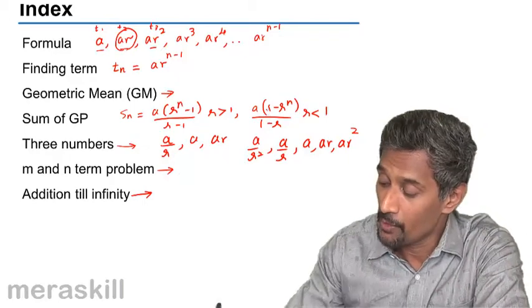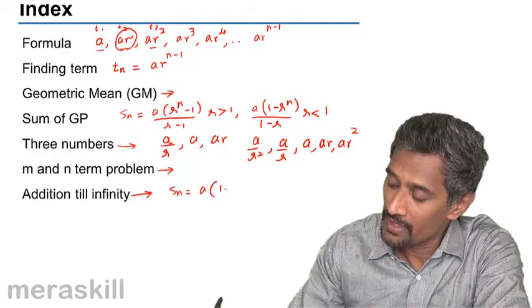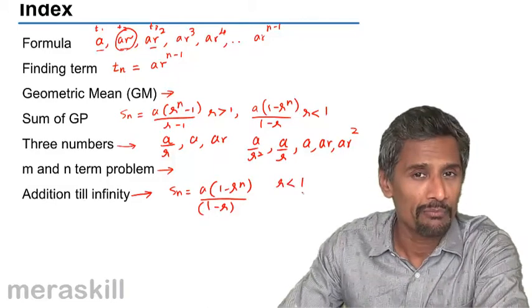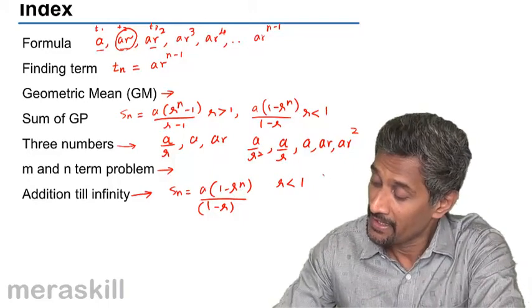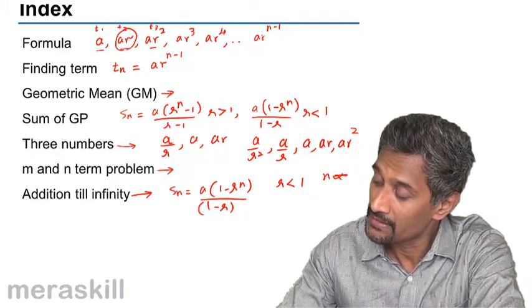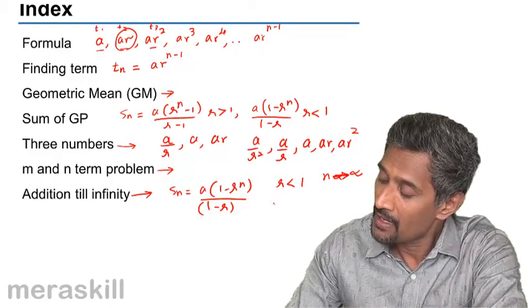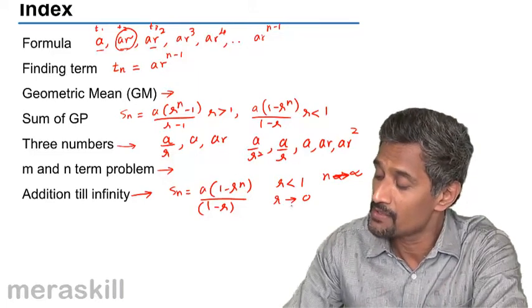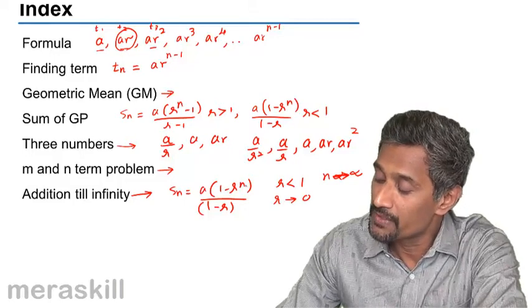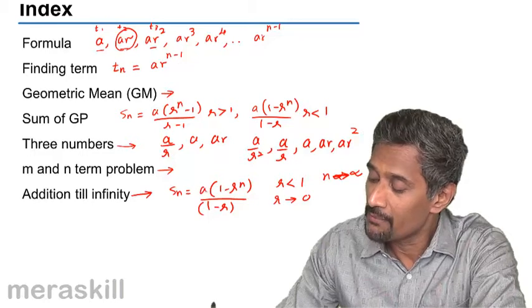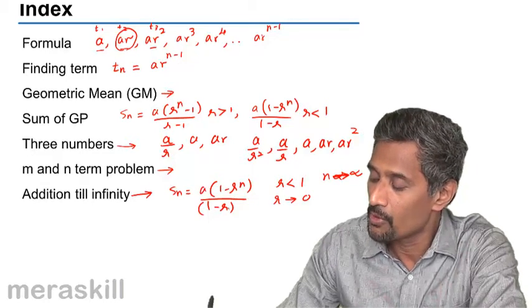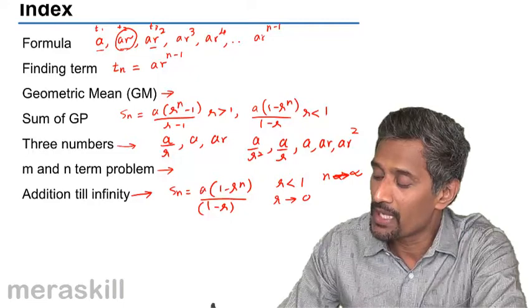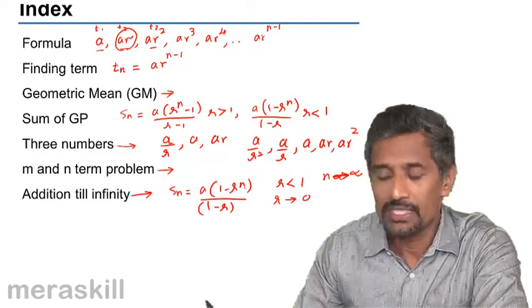The same formula Sn, which turns out to be 1 minus R raised to n upon 1 minus R. When R is very small, much less than 1, as n tends to infinity, R would be tending to 0 because it is a number less than 1. So the moment you increase the number of powers, R raised to n becomes almost 0. So in that case, the same Sn becomes A into 1 minus 0 upon 1 minus R, which is eventually A upon 1 minus R. So for an infinite series, Sn would be A upon 1 minus R, which we will take up in detail further.